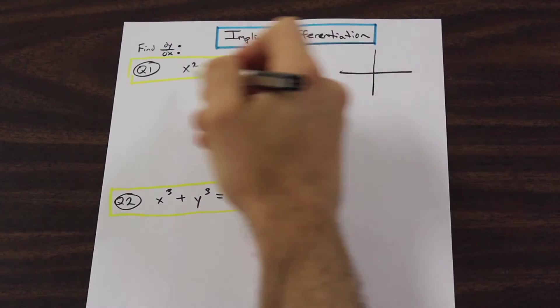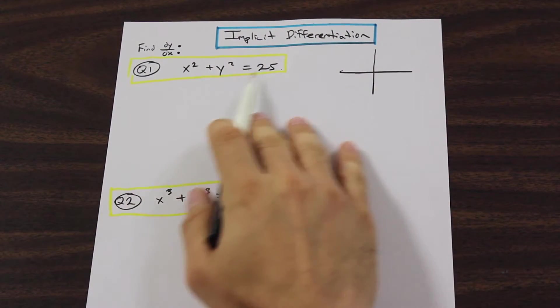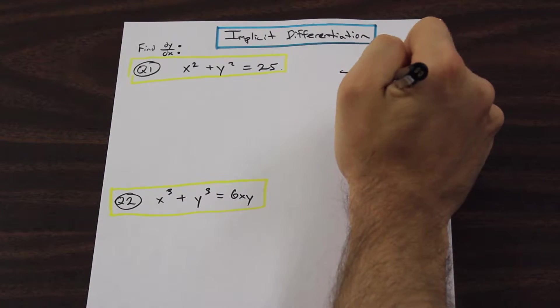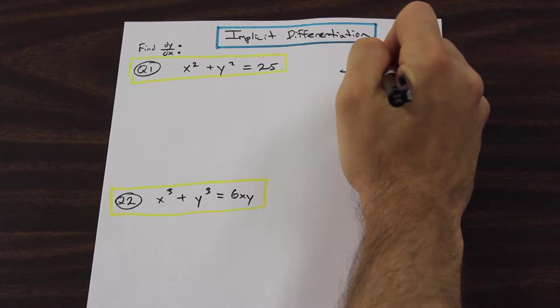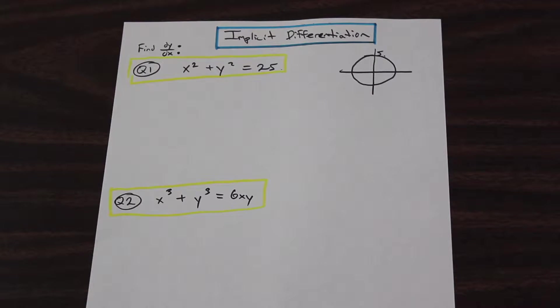For example, the equation listed here in question one is actually a circle with radius five. That is usually when we use implicit differentiation, when we have ellipses or circles or stuff like that. For now, we're just going to work with this fairly simple technique. And the goal of implicit differentiation, in this section at least, is to solve for dy by dx. We're going to isolate dy by dx, and that's how we're going to implicitly differentiate.